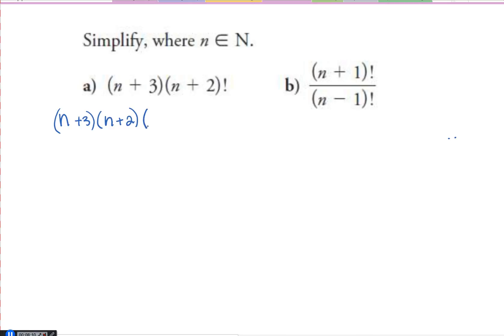But what does that mean here? n plus 2 factorial. So what's a value that's smaller than n plus 2 by 1? So n plus 2 minus 1 would just be n plus 1. And if I want to go smaller than that, that would be n plus 1 minus 1, would be n. And then smaller than that would be n minus 1. And you keep going until you get to 2 and 1, and you just keep going.